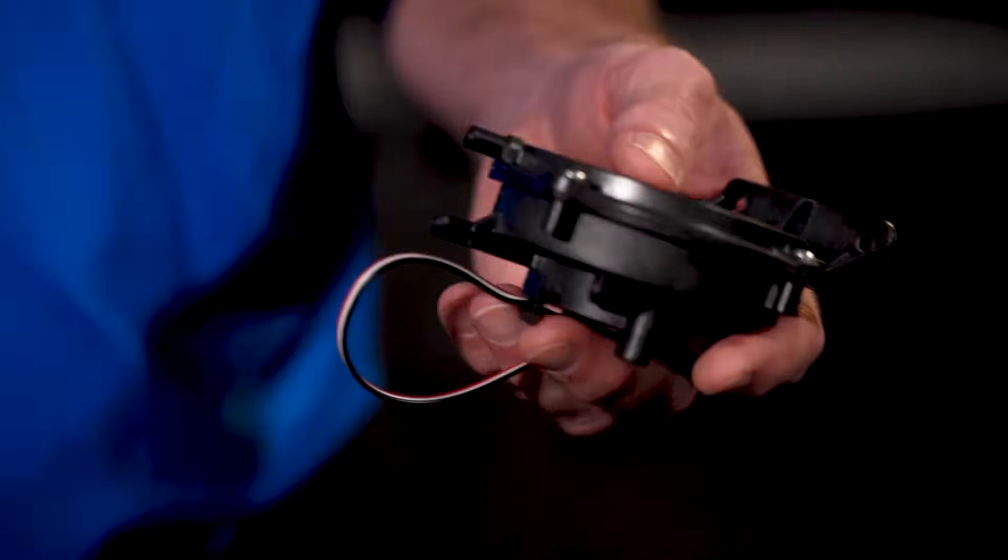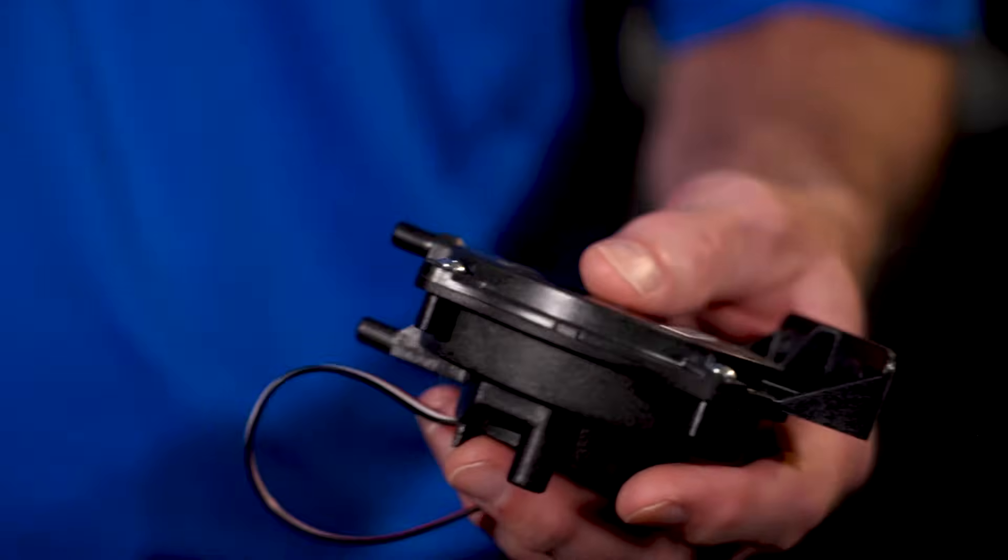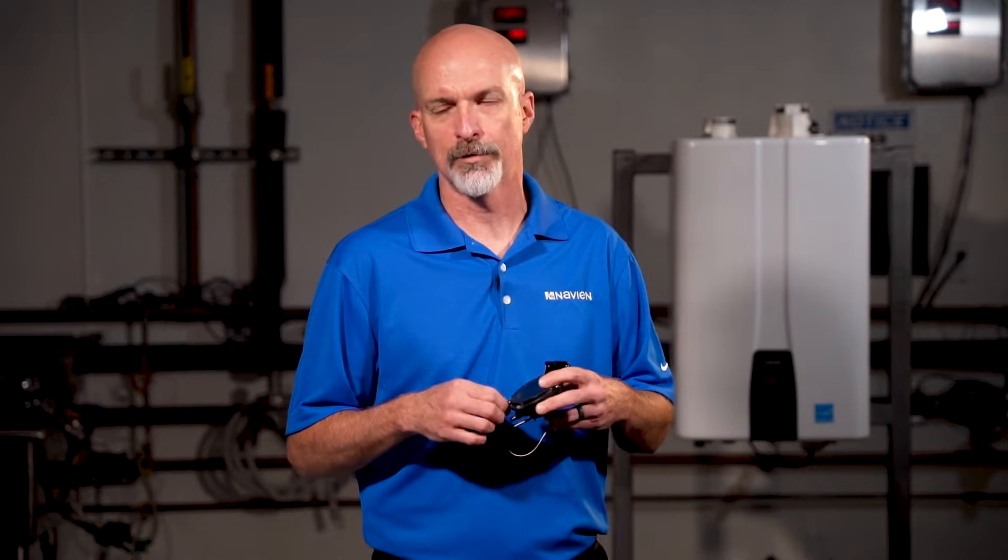Inside our combis, water heaters, and boilers also is an air pressure sensor. The air pressure sensor will monitor and periodically check the vent pressures for both the exhaust and intake. This will also detect a vent blockage, preventing unsafe operation in the unit.